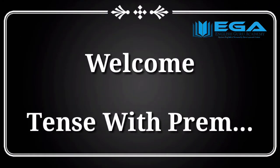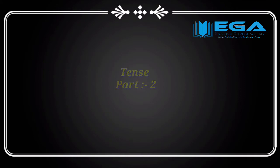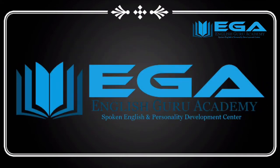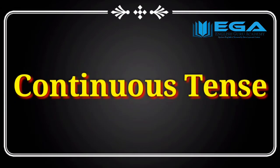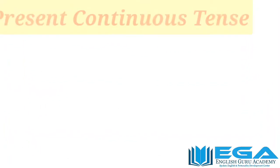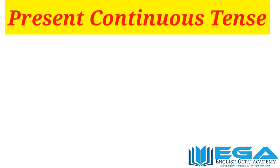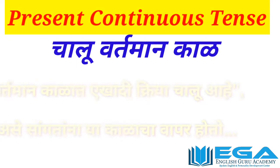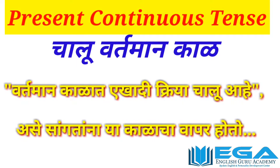Hey, hello! What's up guys, my name is Prem and I have come with the second part of the tense series. The video is by English Guru Academy Vashim. Today we are going to discuss the continuous tense, so let's get started. The first tense is present continuous tense — in Marathi, 'chalu vartaman kaal' — meaning an action that is currently happening.